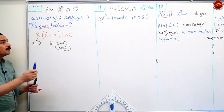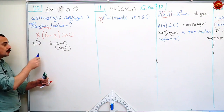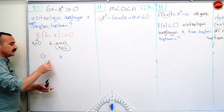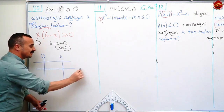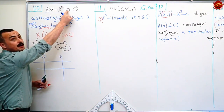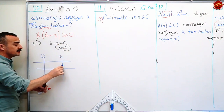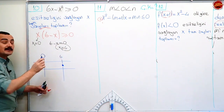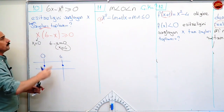Hemen ne yapıyorum? Kökleri küçükten büyüğe doğru sıralıyorum. Küçük köküm sıfır, büyük köküm altı. Çizgilerimi çizdim. Şimdi eşitlik var mı yok mu? Varsa bunların içlerini dolduruyorum. Bunu unutursan ayvayı yersin dedik. Dikkat et, unutma. Tamam mı?